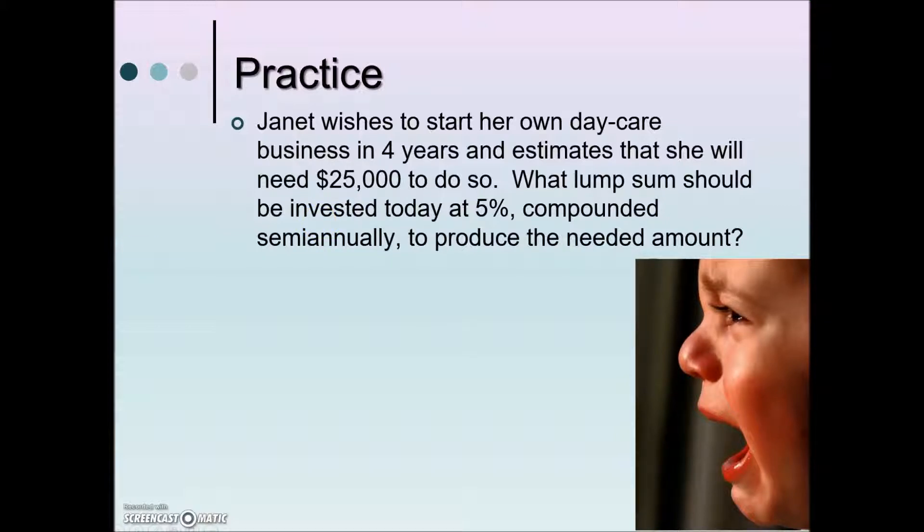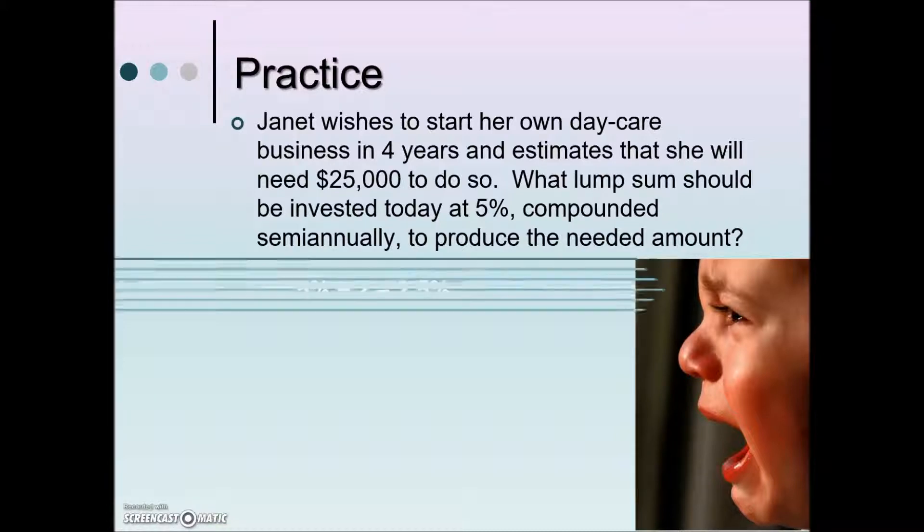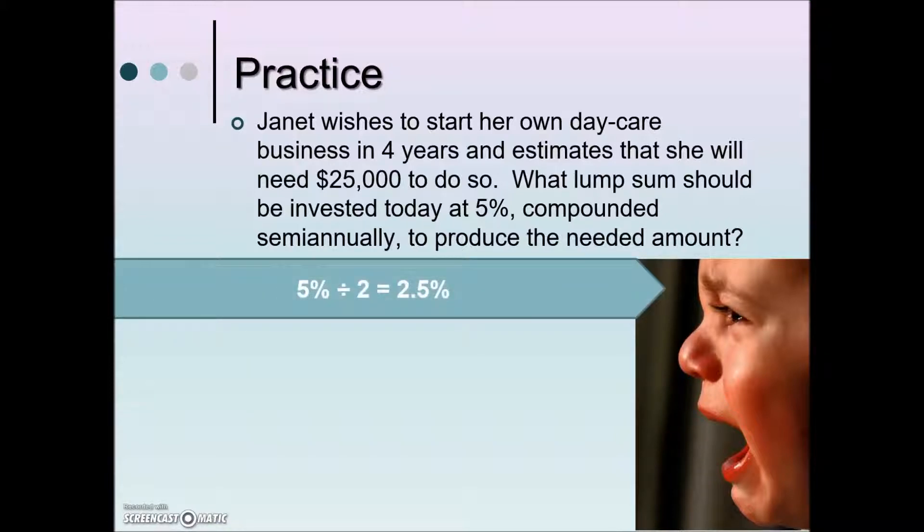When we use our present value table, we need to calculate i, the interest rate per period. So we'll take our 5% divided by 2, 2 because of the compounding semi-annually, twice a year, to give us an i value.